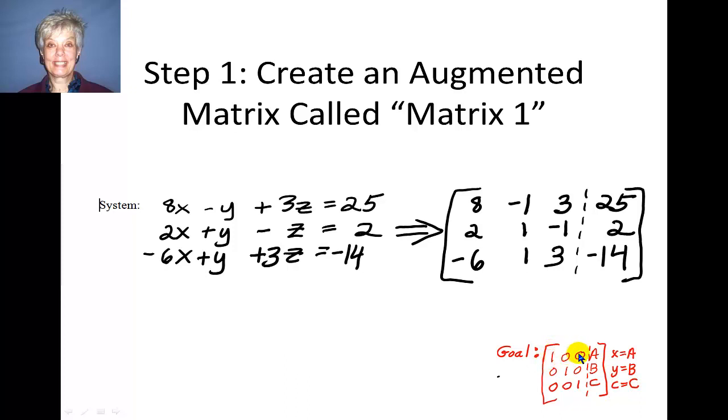This matrix, this 3 by 3 matrix, 1, 0, 0, 0, 1, 0, 0, 0, 1, is called the identity matrix. And Gauss-Jordan will let us get there.